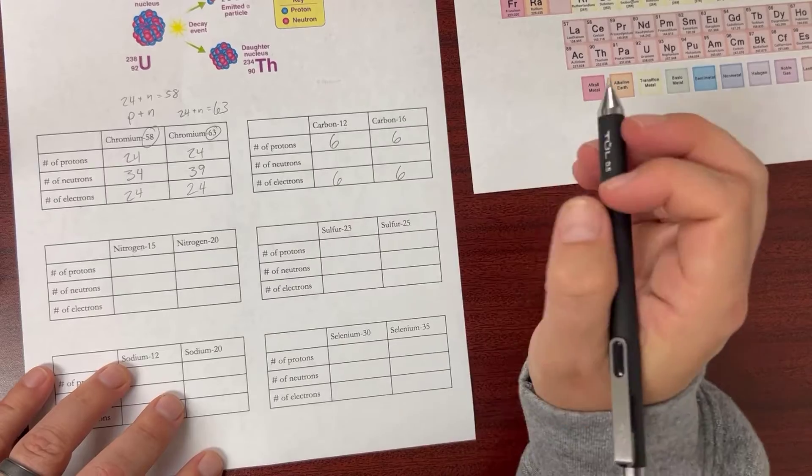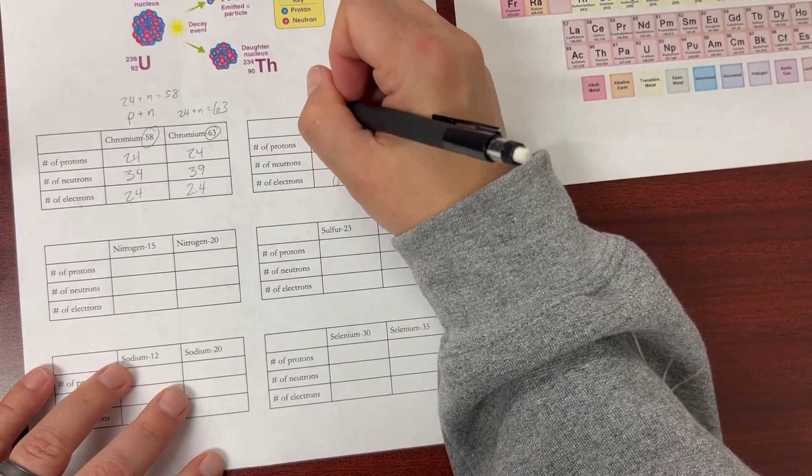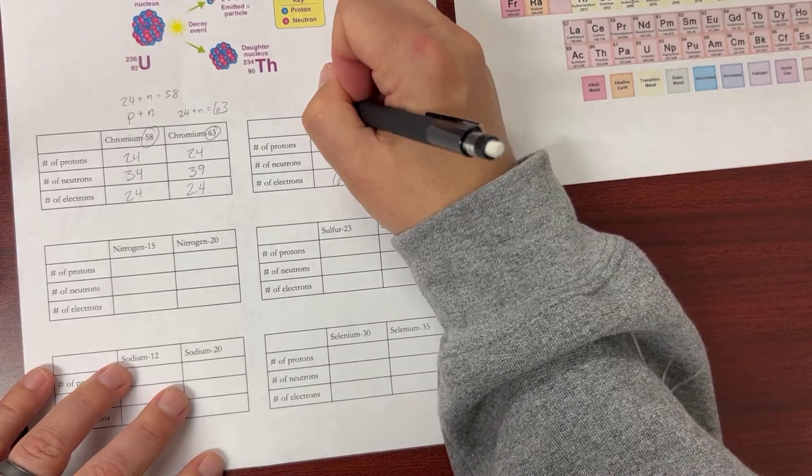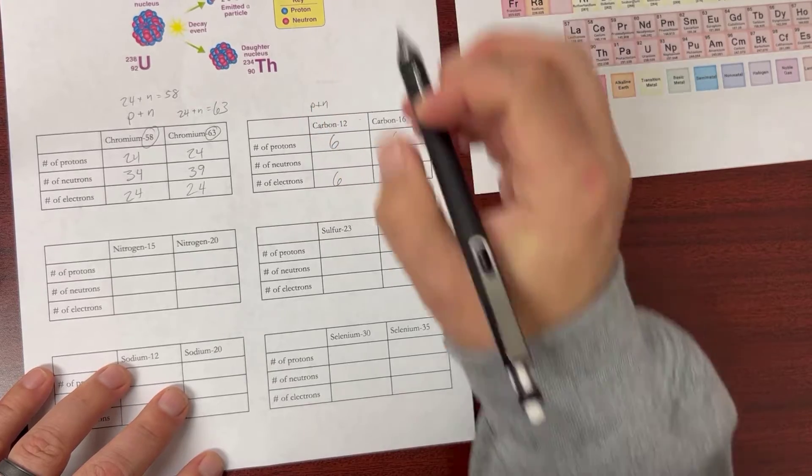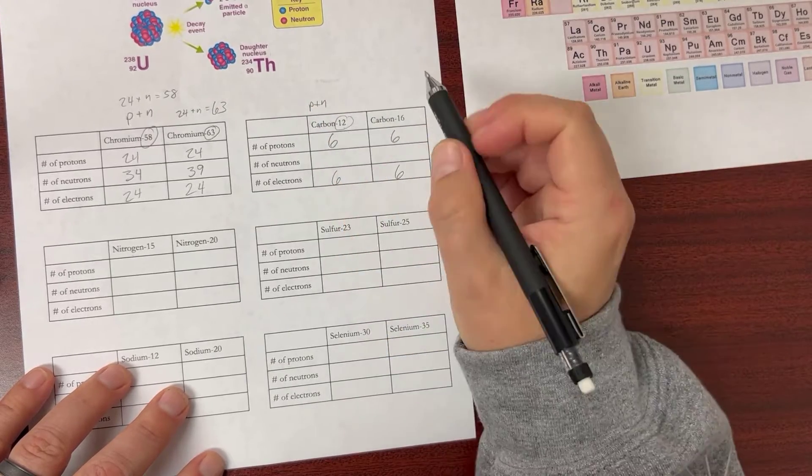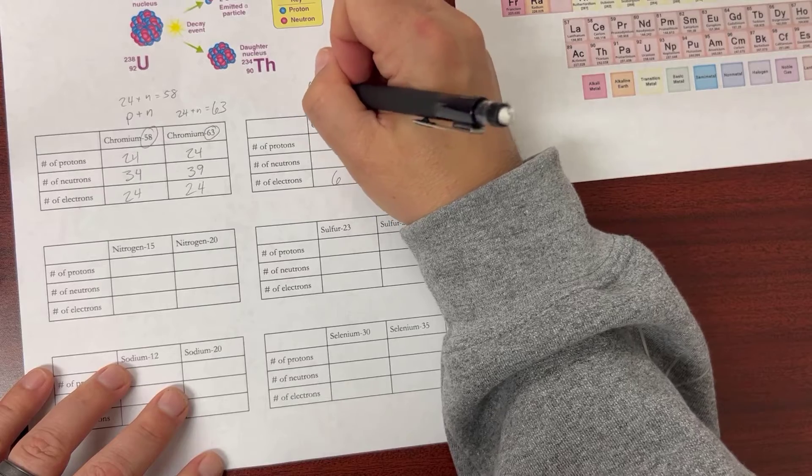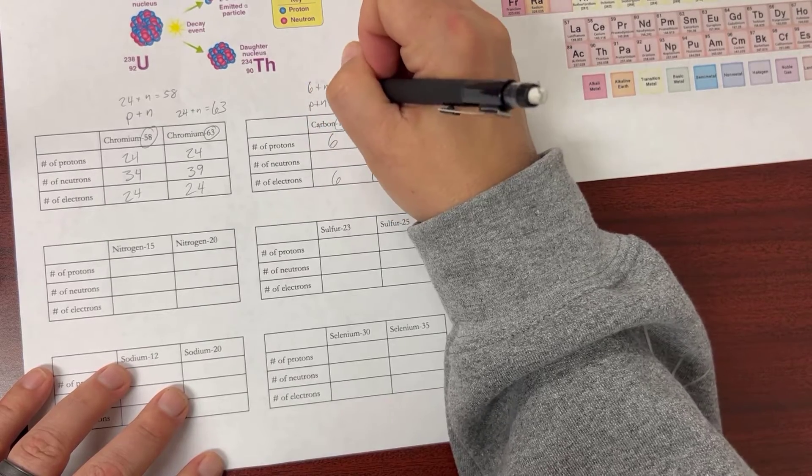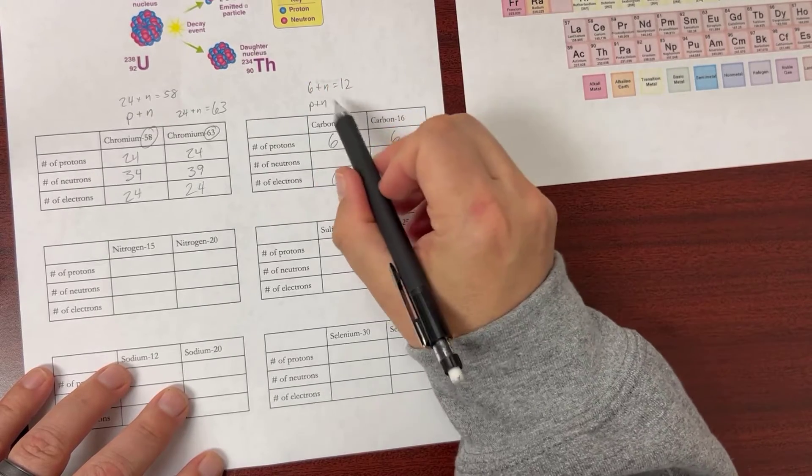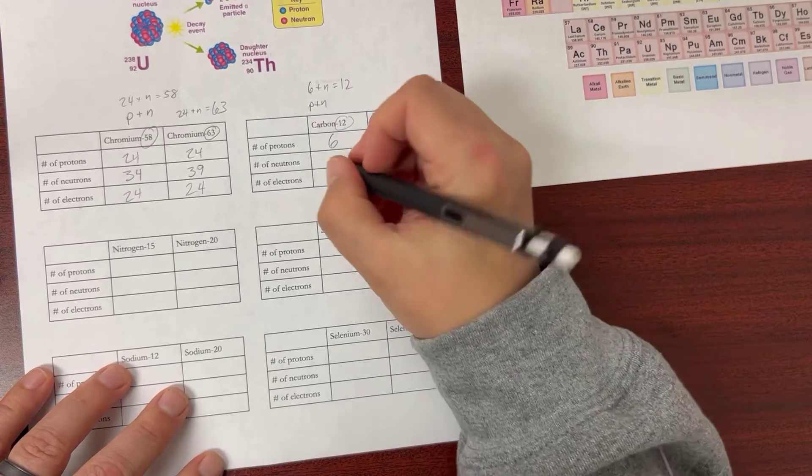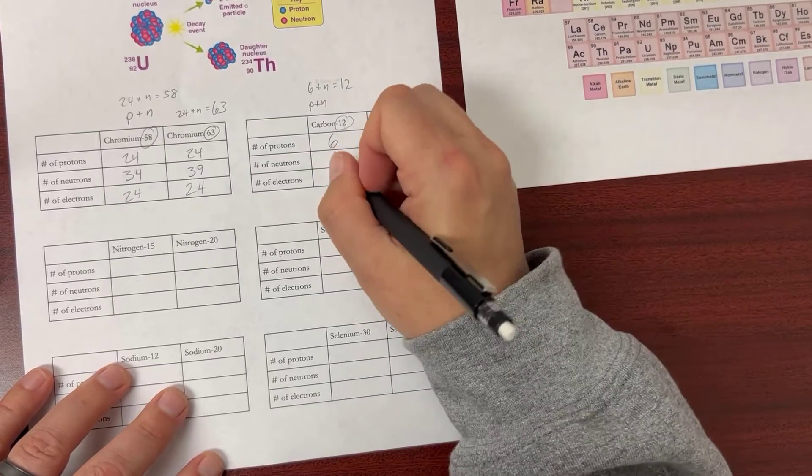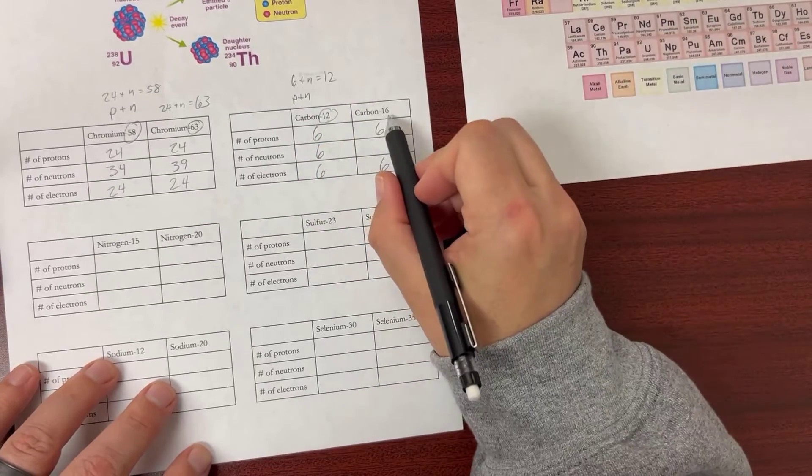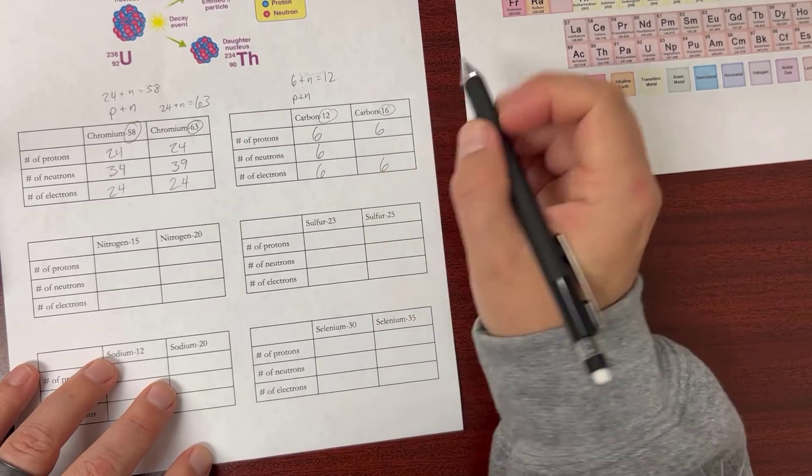Now I have to figure out how many neutrons. Remember, protons plus neutrons equals the mass number, so 6 + n = 12. Well, I know that 6 + 6 = 12—don't even need to do the math on that, so I put six. Carbon-16 has a higher mass number.